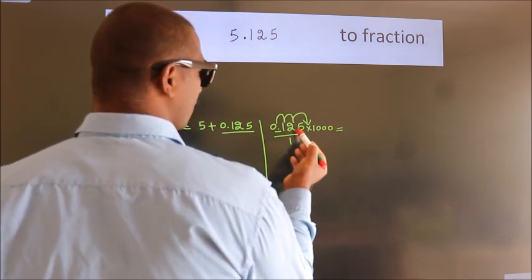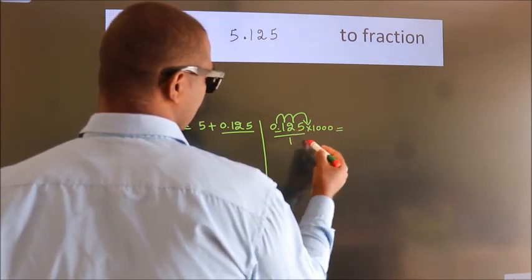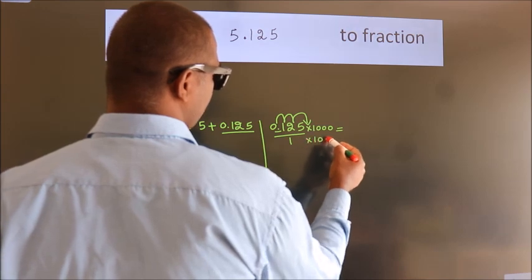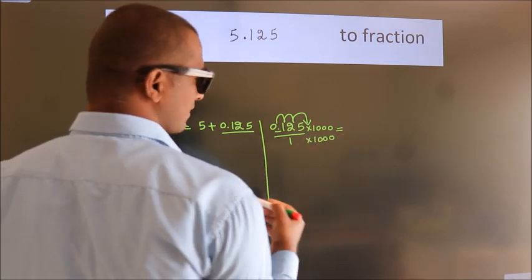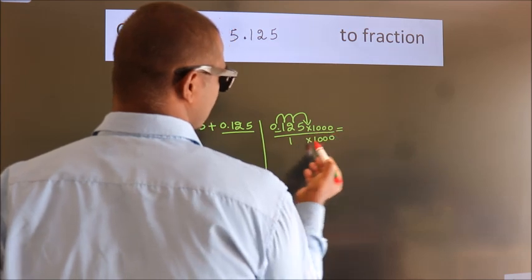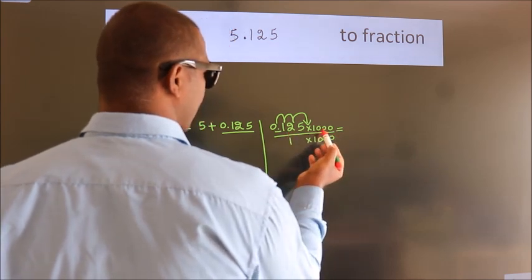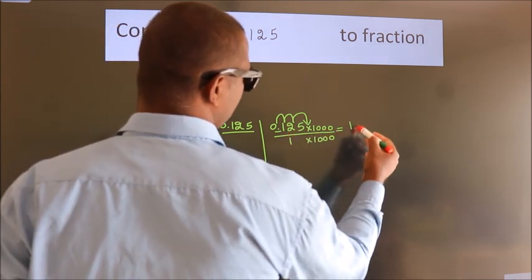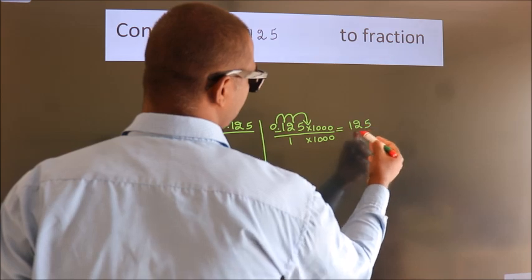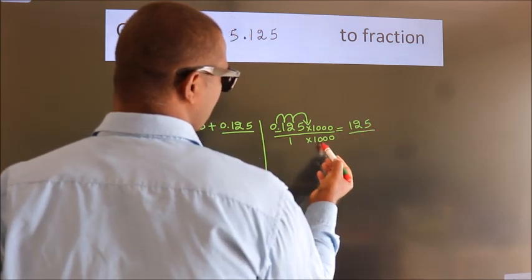Whatever number you are multiplying in the numerator, in the denominator also do the same. Next, 0.125 into 1000 equals 125, 1 into 1000.